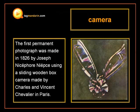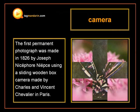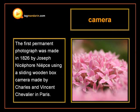The first permanent photograph was made in 1826 by Joseph Nicéphore Niépce, using the sliding wooden box camera made by Charles and Vincent Chevalier in Paris.